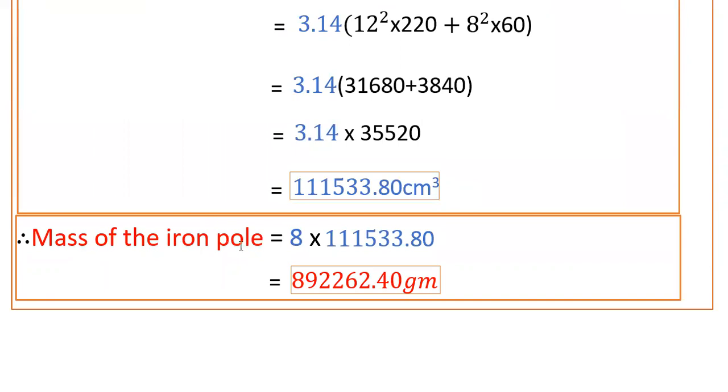If you multiply this, you get 111533.80 cm³. This is the volume of the iron pole. Mass of the iron pole: 1 cm³ is 8 grams, so 111533.80 cm³ is 8 × 111533.80, which equals 892262.40 grams. This is the mass of the iron pole.